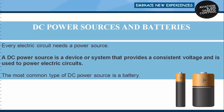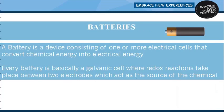DC power sources and batteries. Electromotive force in an electric circuit can be produced by six different methods. Every electric circuit needs a power source. On an aircraft, the battery may be used for engine starting, but far more importantly, the battery is the source of emergency power when the generator fails. A DC power source is a device or system that provides a consistent voltage and is used to power electric circuits. The most common type of DC power source is a battery.